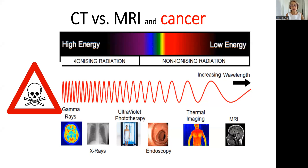Ionizing radiation is represented here on this graph, and it probably creates the most damage. CAT scans are most damaging in terms of cancerogenic effect on our body. They are followed by x-rays, ultraviolet and tanning beds, endoscopy, thermographic imaging, and then MRI. MRI creates the least cancer risk.